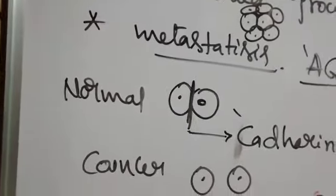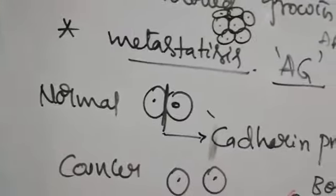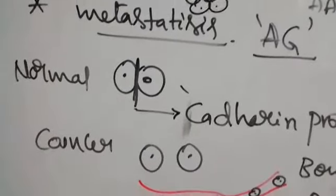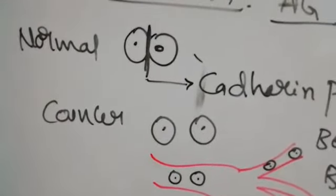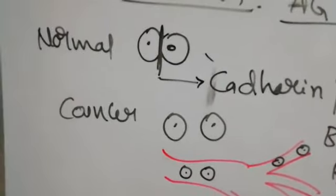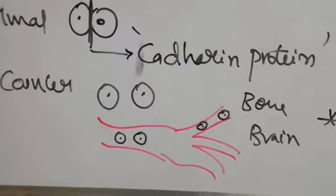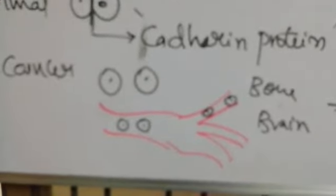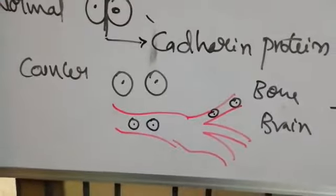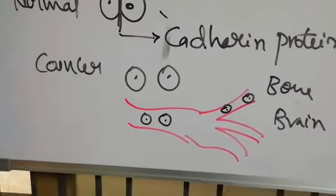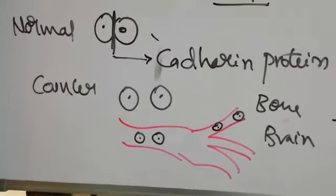Metastasis: Normal cells contain cadherin protein. This cadherin protein is lost in cancerous cells. Through the blood vessels, they reach different organs and form new tumors or secondary cancer. This property is called metastasis.